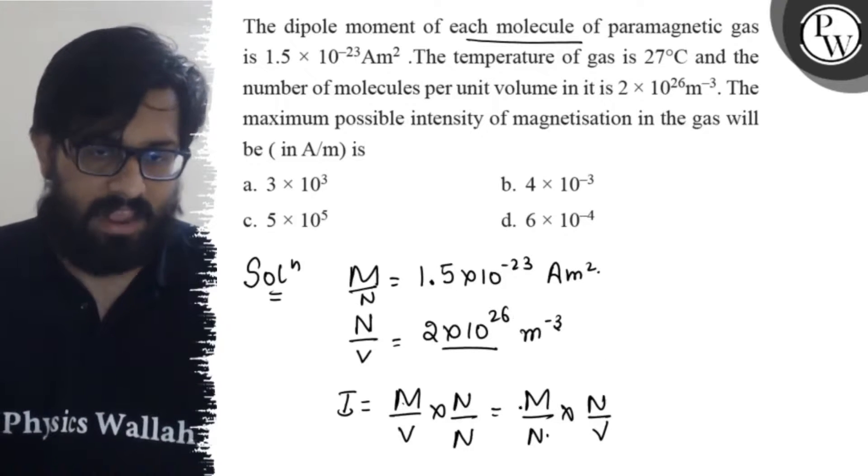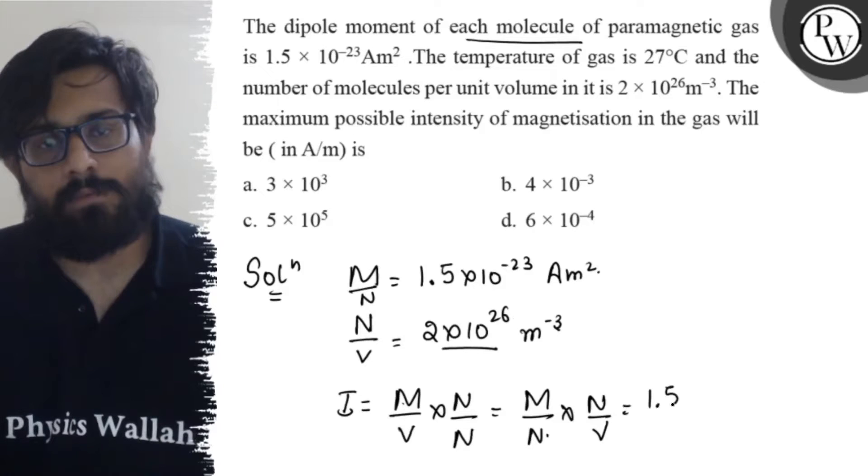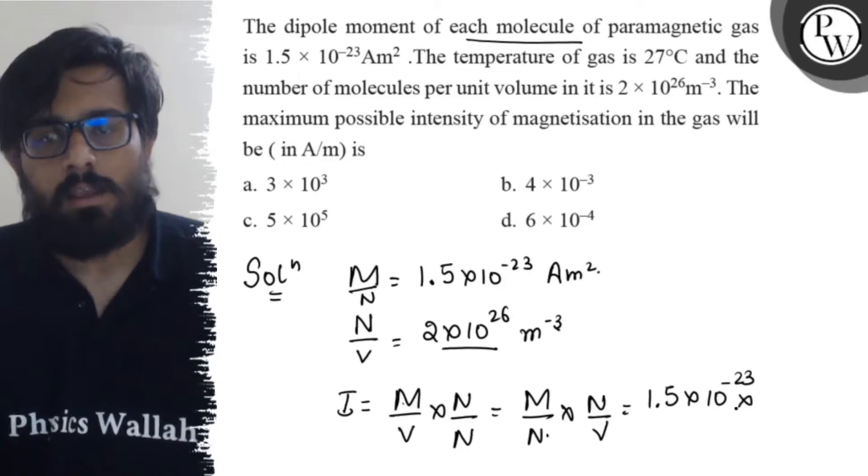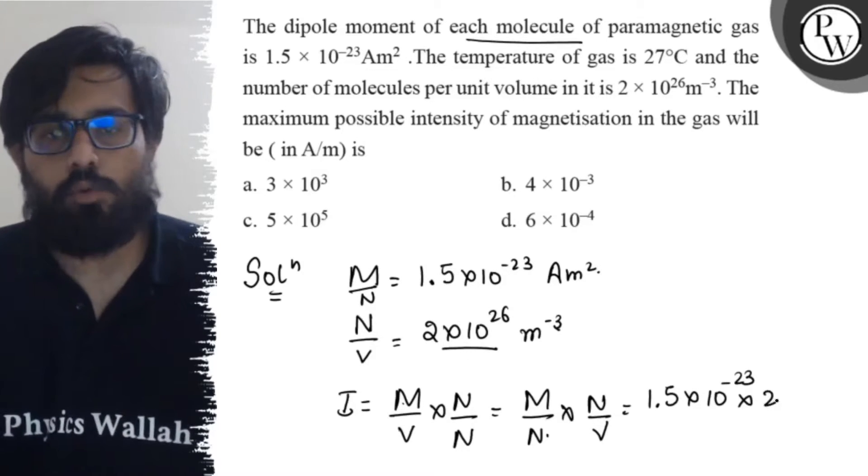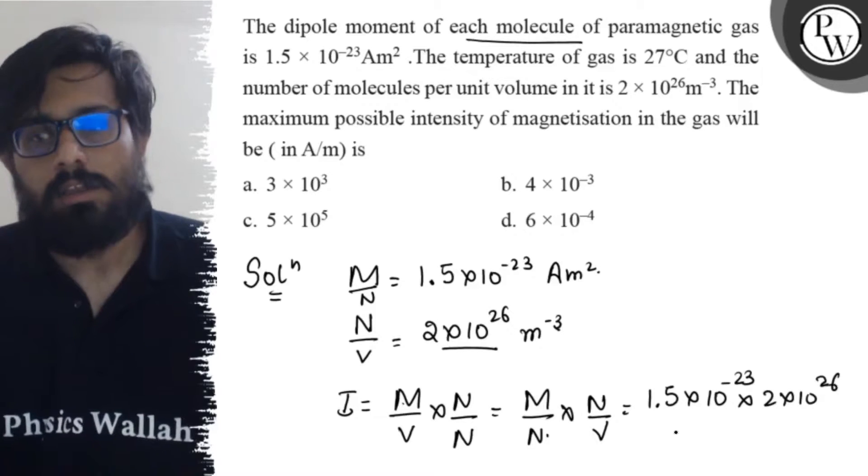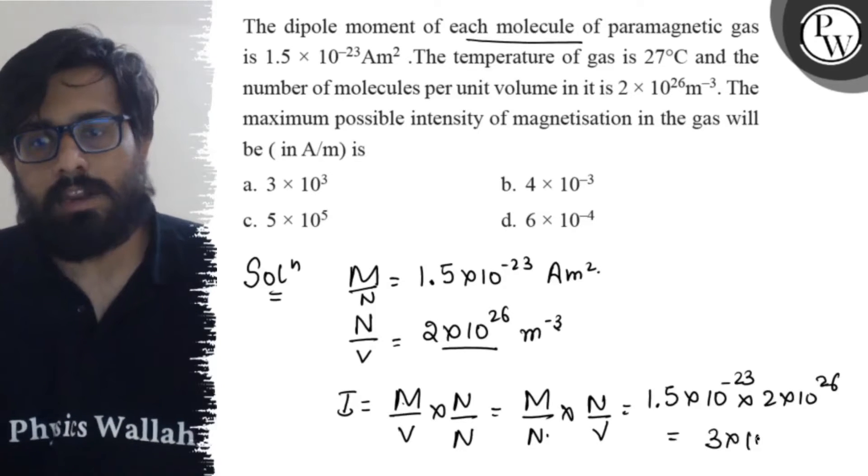which is 1.5 × 10^-23. And N/V is 2 × 10^26. Solving it we get a value of 3 × 10^3.